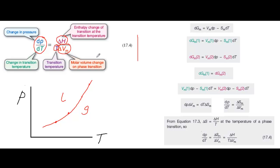You can see in box 17.2 how the Clausius-Clapeyron equation is derived. It's always useful to understand how an equation is derived, because it helps you understand the way the equation works, and it makes it easier to remember the equation.